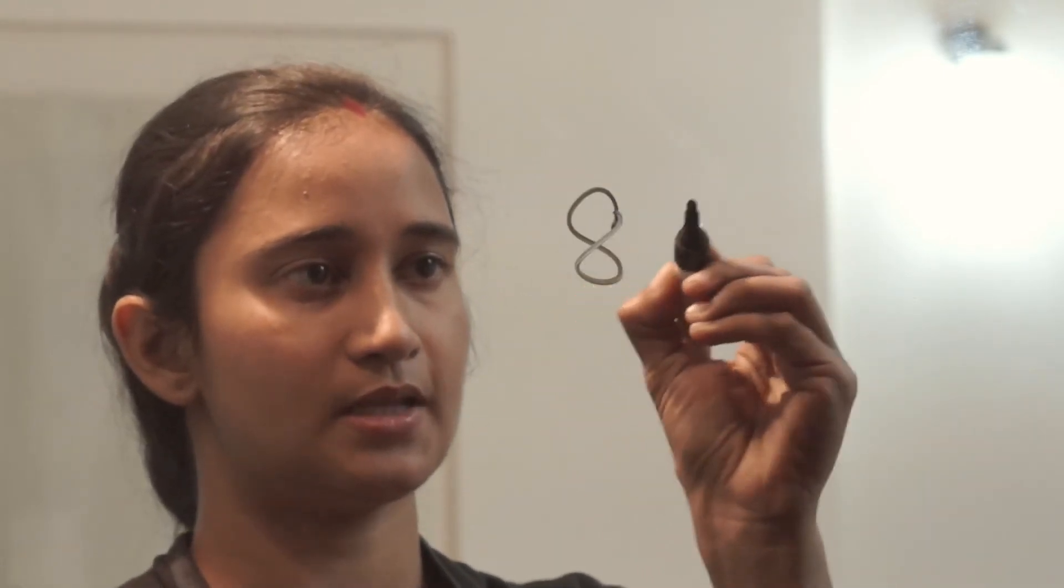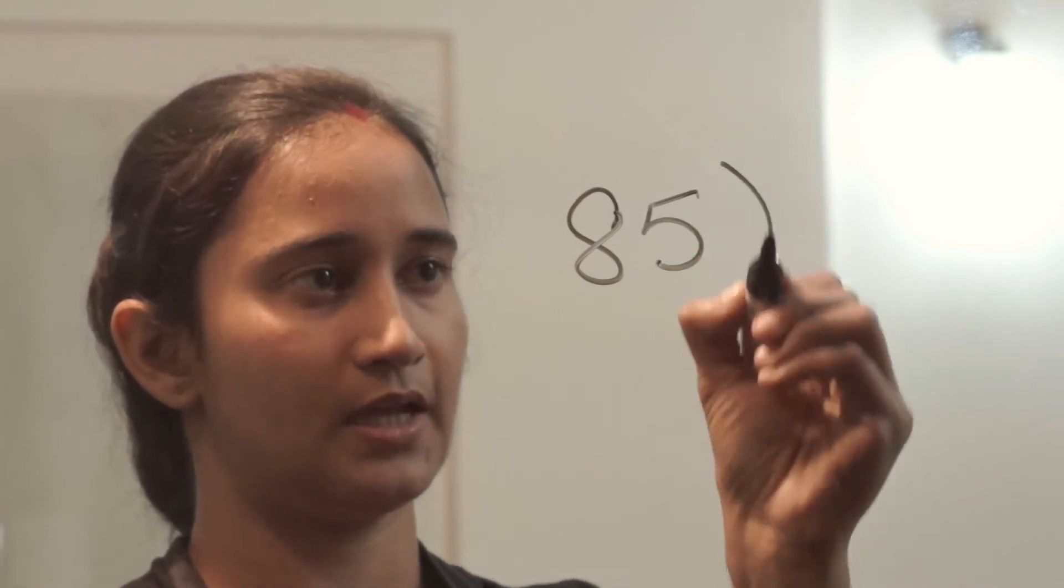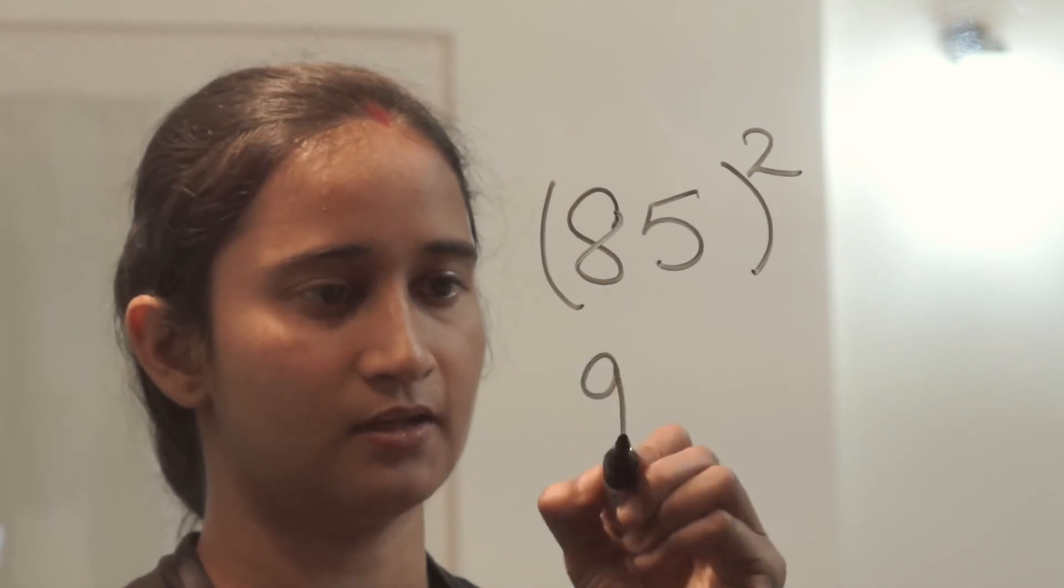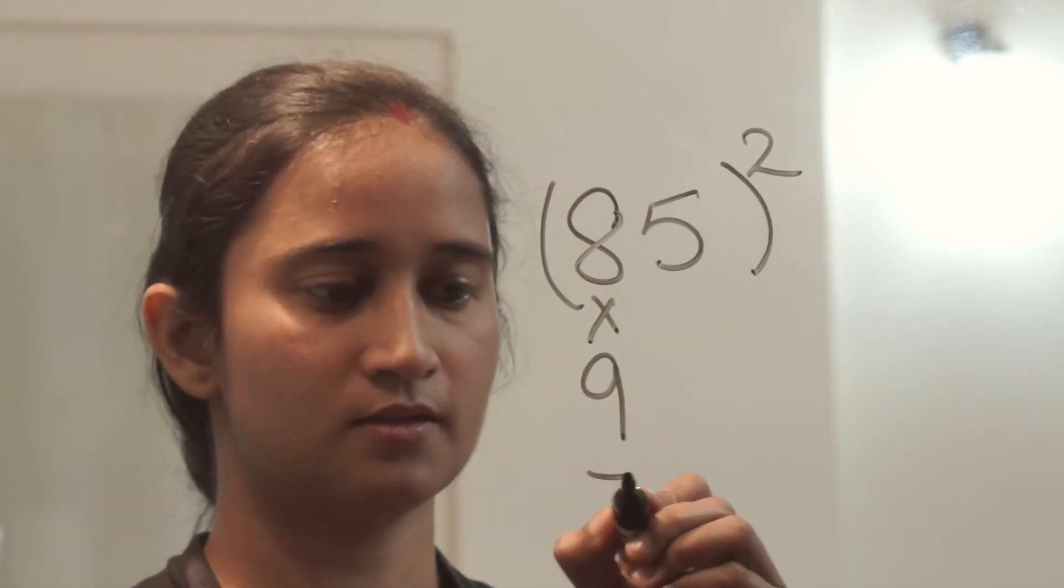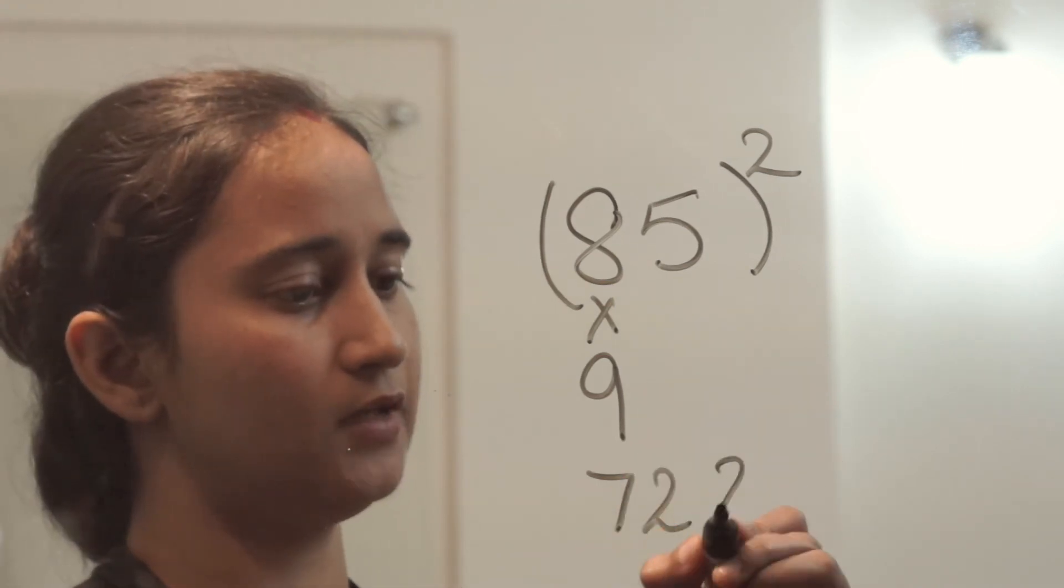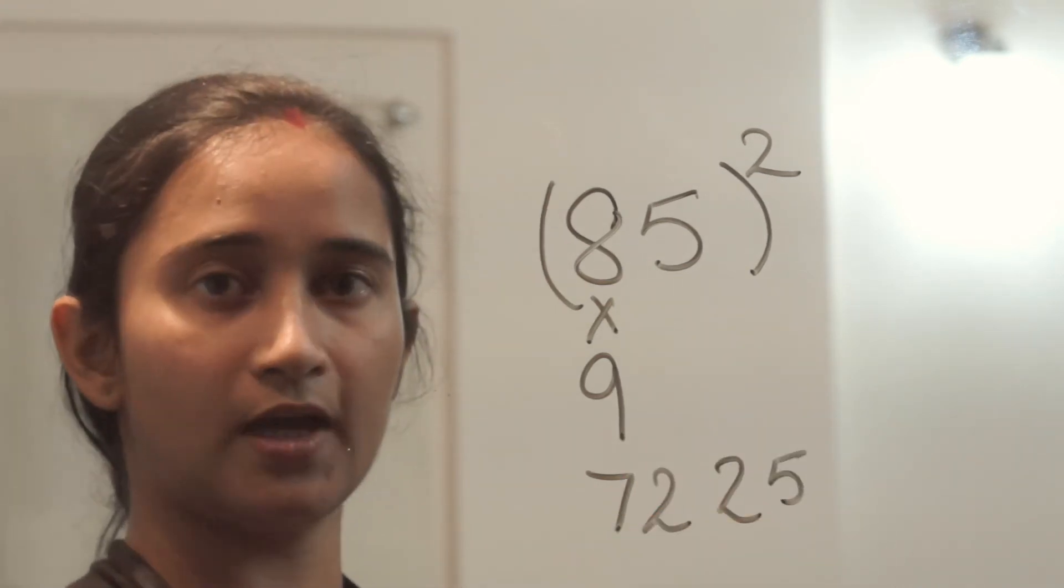Let's take one more example. Now we will take a bigger number. Number is 85. 85 whole square. What is the next number after 8? 9. 8 times 9? 72. And what is the square of 5? 25.